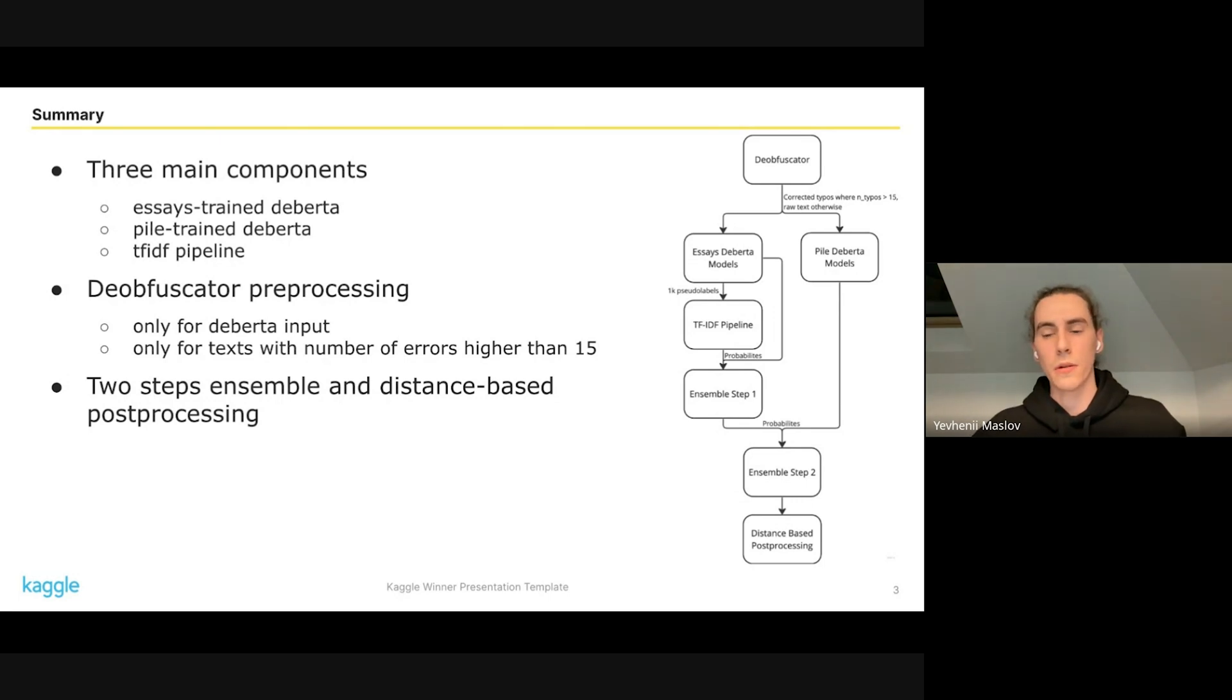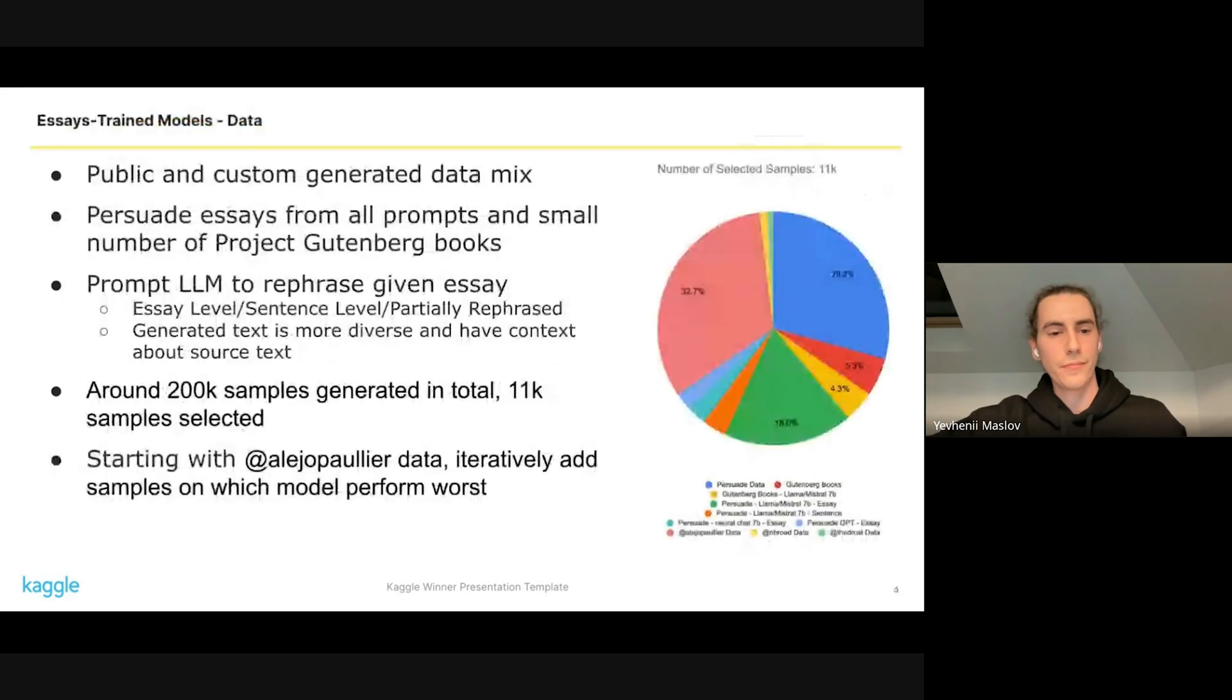The backbone of our solution is transformers - DeBERTa large models trained on different diverse large datasets. To train the first four models, we used a mix of Persuade public generated data and custom generated data. We also mixed in small number of Project Gutenberg books. At this stage, data were generated by prompting Cohere to rephrase text.